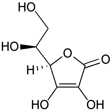In redox processes, the reductant transfers electrons to the oxidant. Thus, in the reaction, the reductant or reducing agent loses electrons and is oxidized, and the oxidant or oxidizing agent gains electrons and is reduced. The pair of an oxidizing and reducing agent involved in a particular reaction is called a redox pair.